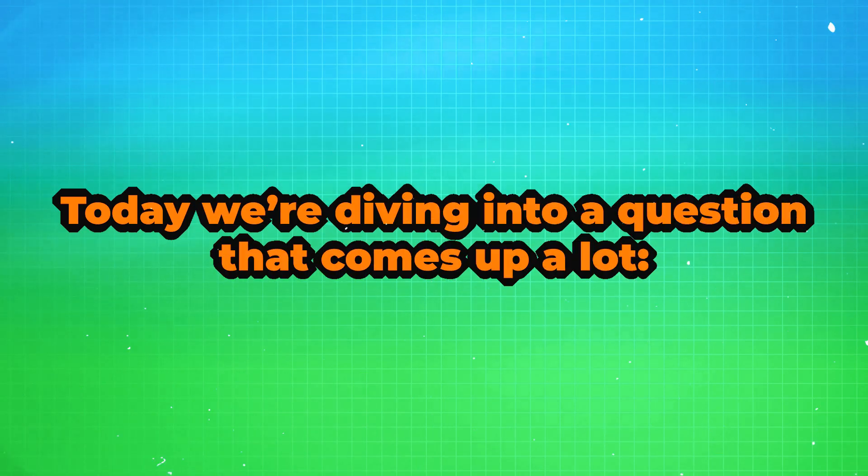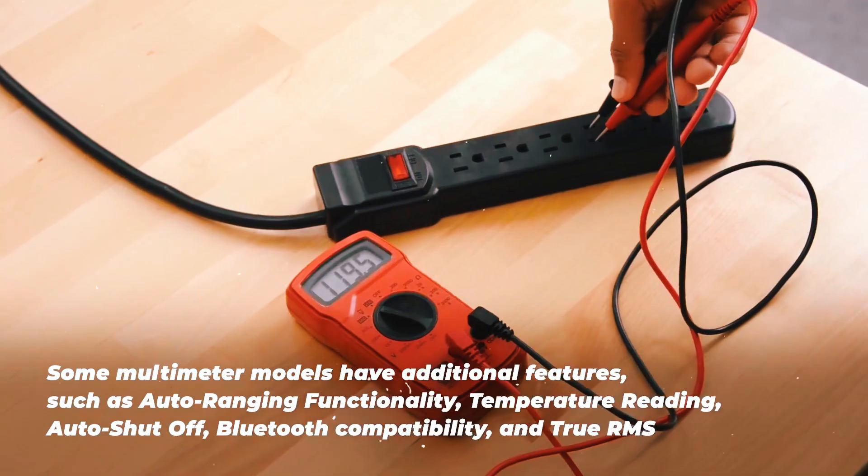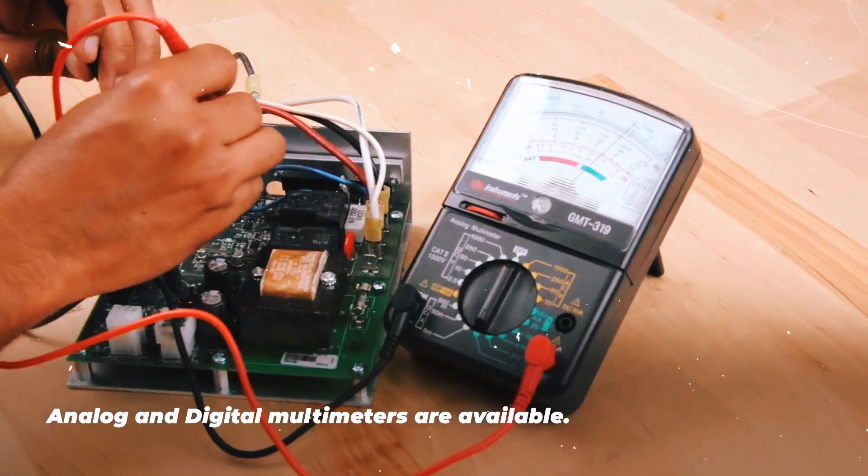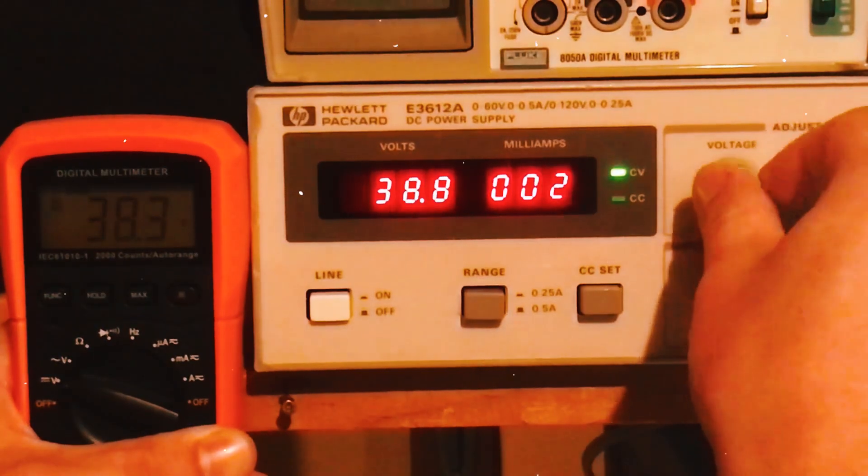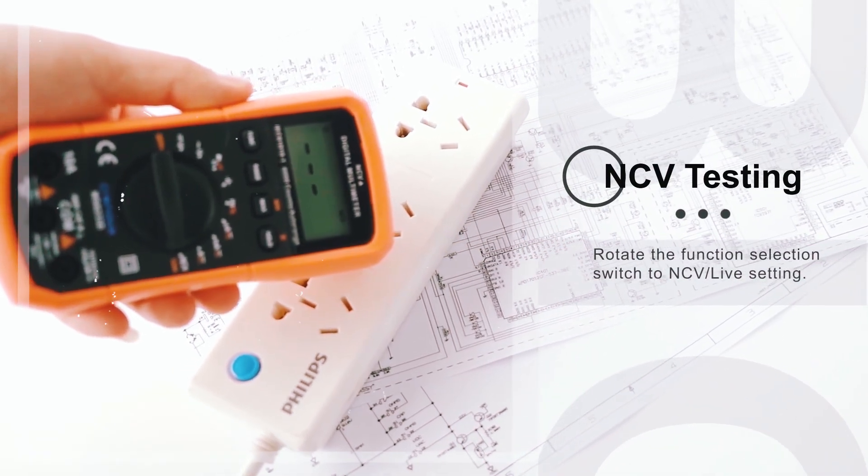Today we're diving into a question that comes up a lot. Should you choose a digital or analog multimeter? Both types of meters measure the same things: voltage, current, and resistance, but how they do it and what they offer can be very different. So, let's break it down to help you decide which one's right for you.